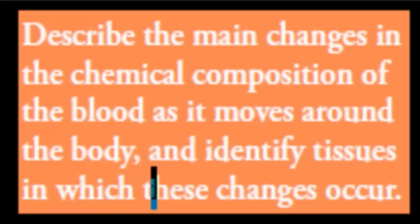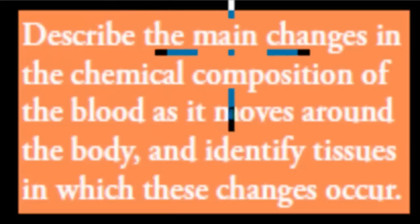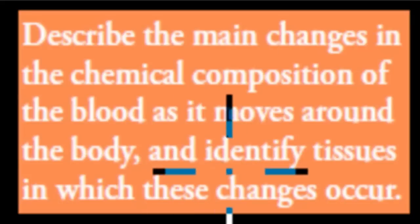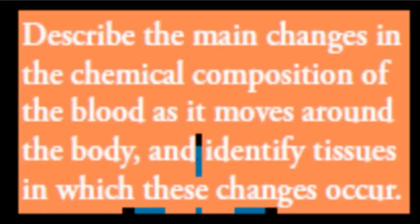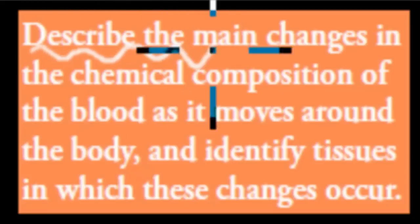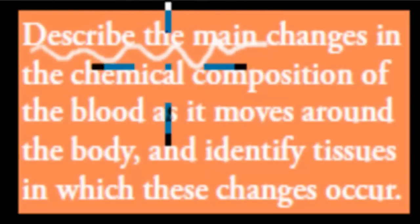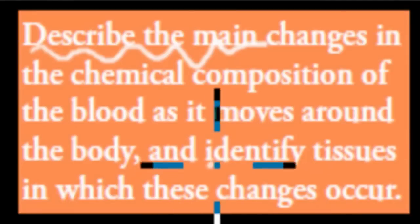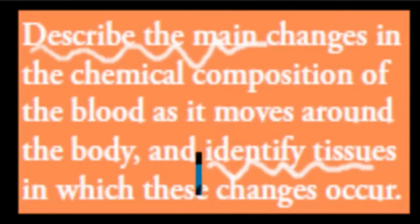Welcome back. In the last video we talked about arteries, capillaries, and veins, and what kind of function and structure they had. In this video we're going to cover the next stop point: it's all about the chemical composition of blood. The learning objective says: describe the main changes in the chemical composition of the blood as it moves around the body, and identify the tissues at which these changes occur.